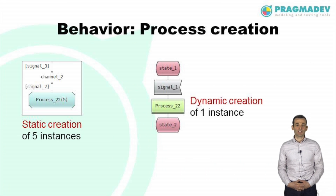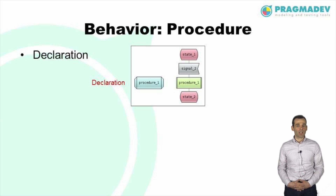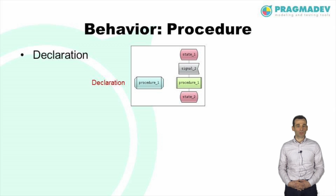Process instances in SDL can be created either statically or dynamically. Static creation is done at system startup and the number of instances is set in the process symbol. Dynamic creation is done at runtime, during the execution of a transition — in this case, one instance of a process is created. A procedure can be declared everywhere in the structure of a system, be it block or process. The declaration symbol has the name of the procedure, like procedure 1 in this example.